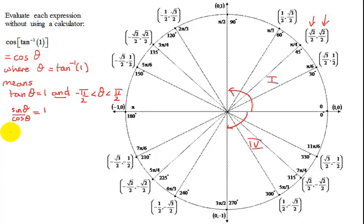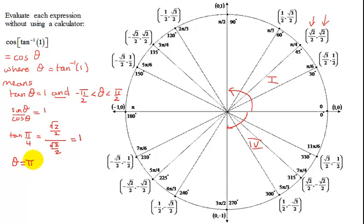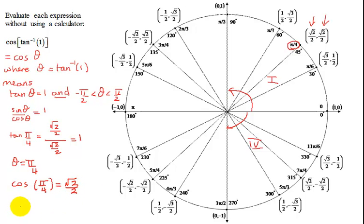Let's check: the tangent of pi over 4 equals the sine of theta, which is square root of 2 over 2, divided by the cosine of theta, which is also square root of 2 over 2, which equals 1. Therefore, theta has to be equal to pi over 4. So what was I asked to find originally? I was asked to find the cosine of theta, which is the cosine of pi over 4. The cosine of pi over 4 is the x-coordinate at pi over 4, which is the square root of 2 over 2. So the answer is: the cosine of the inverse tangent of 1 equals the square root of 2 over 2.